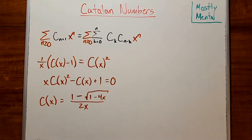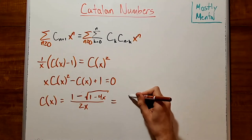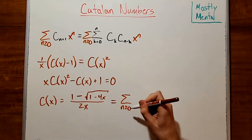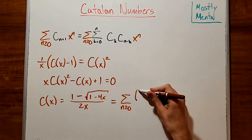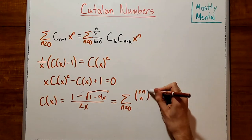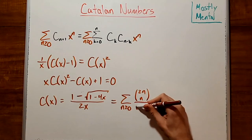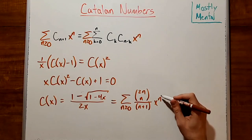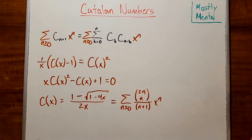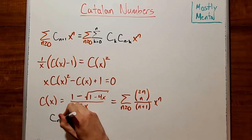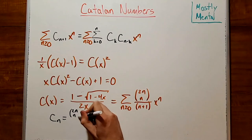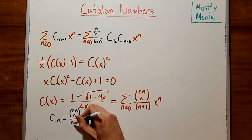And if we take the Taylor series expansion for this, we get that C of x is the sum for n greater than or equal to 0 of 2n choose n divided by n plus 1 times x to the n, which tells us that C sub n is 2n choose n divided by n plus 1.